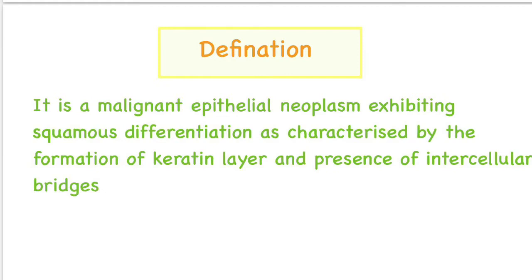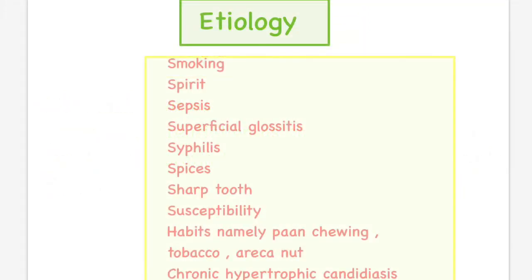Moving on to the etiology of oral squamous cell carcinoma, we can remember it with 6 S's: smoking, spirit, sepsis, superficial glossitis, syphilis, spices, sharp tooth, and susceptibility of an individual. Apart from this, habits mainly pan chewing, tobacco chewing, areca nut, and chronic hypertrophic candidiasis are also responsible for oral squamous cell carcinoma.